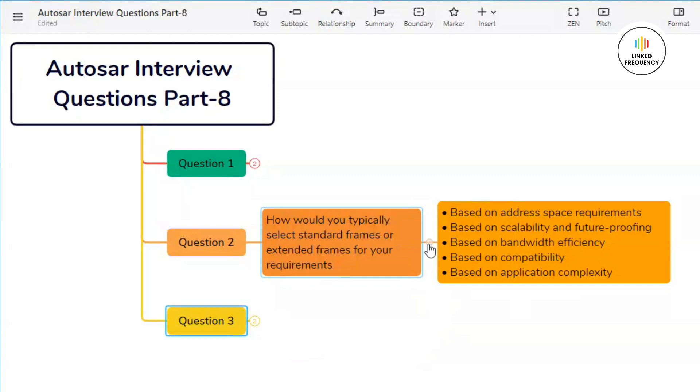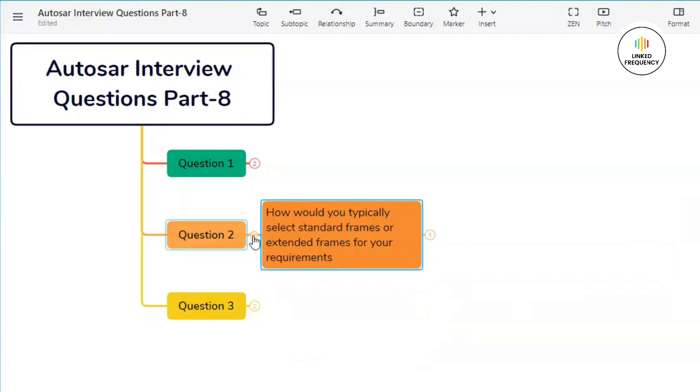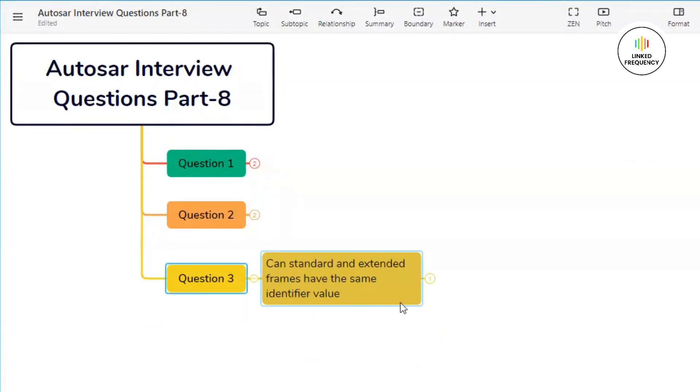The third question which basically states: Can standard and extended frames have the same identifier value? Well, the answer to this question is no. Standard and extended frames cannot have the same identifier value as they have different lengths of the identifier field.